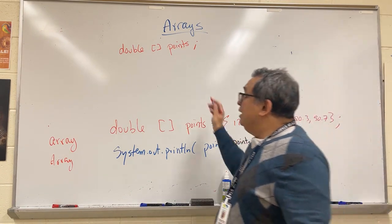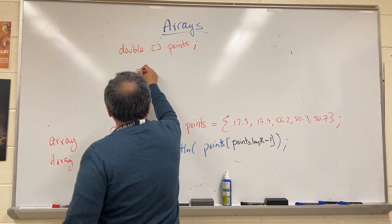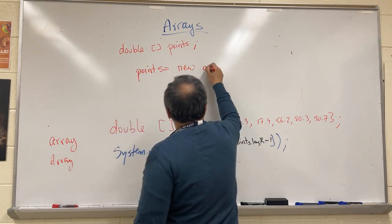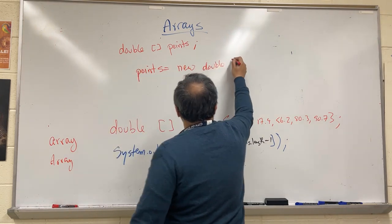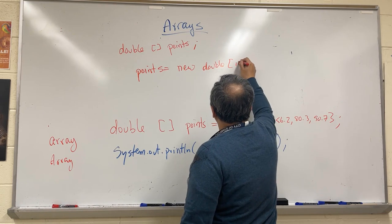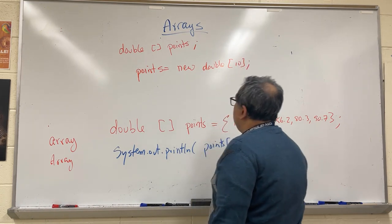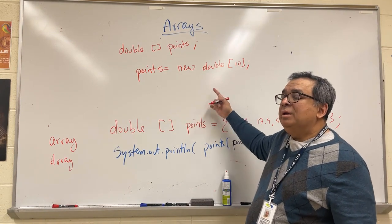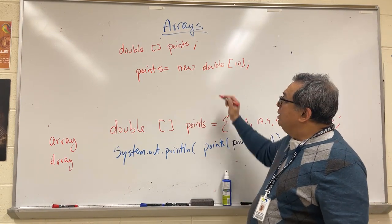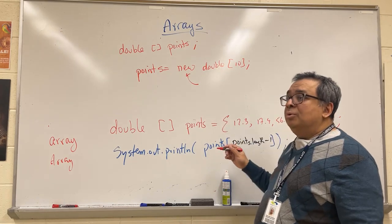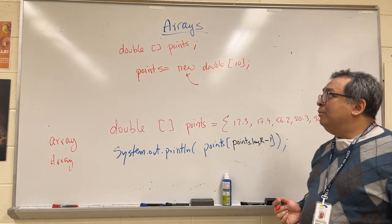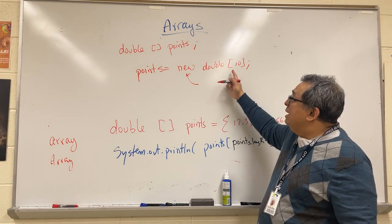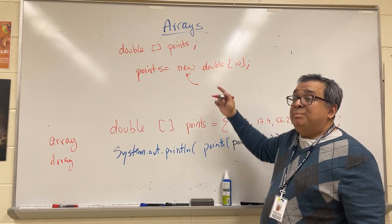Then later on I could come along and say points equals new double, and then I could put in here some number like 10. What this does is it creates the array, it allocates memory. You know it allocates memory because of this keyword here, new. Its job is to allocate memory.